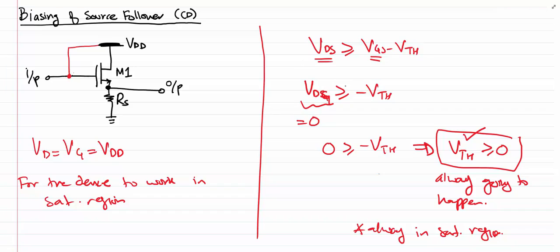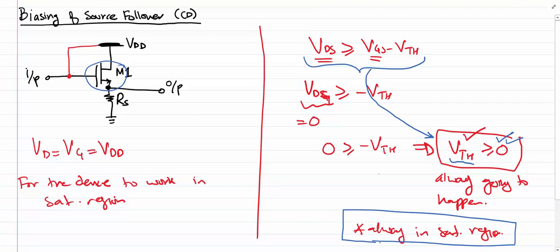Let me tell this whole story in a different manner. If you want the device to operate in saturation region, then this condition needs to be true. Plugging in the values, this condition turns out to be that VTH must always be non-negative. Since we're dealing with an NMOS device, VTH is going to be positive, so this condition is always true, which means the device will always be in saturation region.